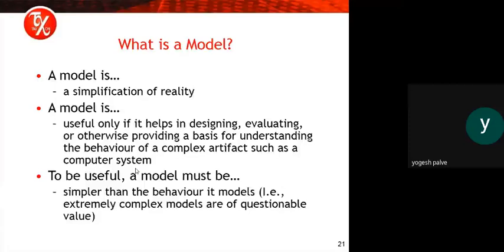When understanding interaction, the first question is: what is a model? A model is nothing but a simplification of reality. A model is useful only if it helps in designing, evaluating, or otherwise providing a basis for understanding the behavior of complex artifacts such as a computer system. To be useful, a model must be simpler than the behavior it models — an extremely complex model is of questionable value.